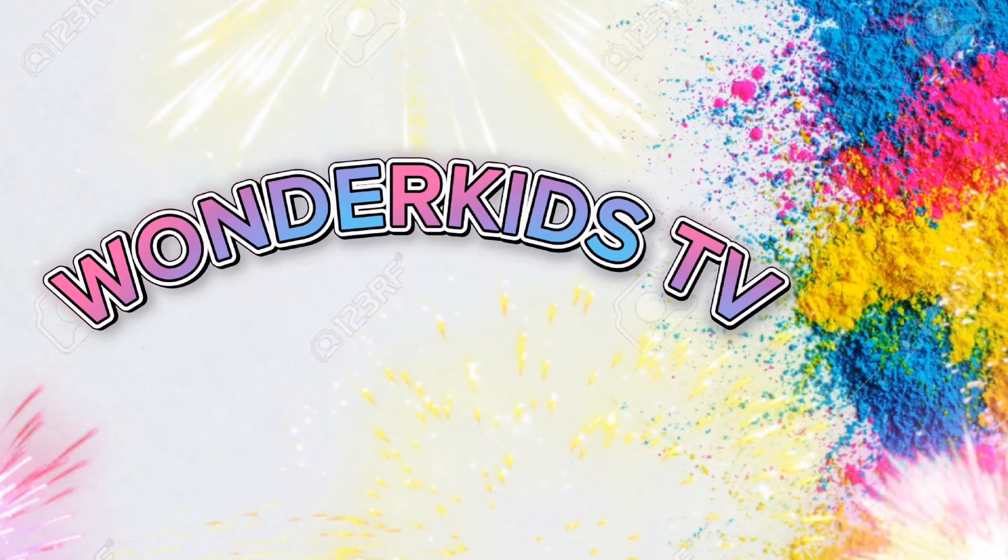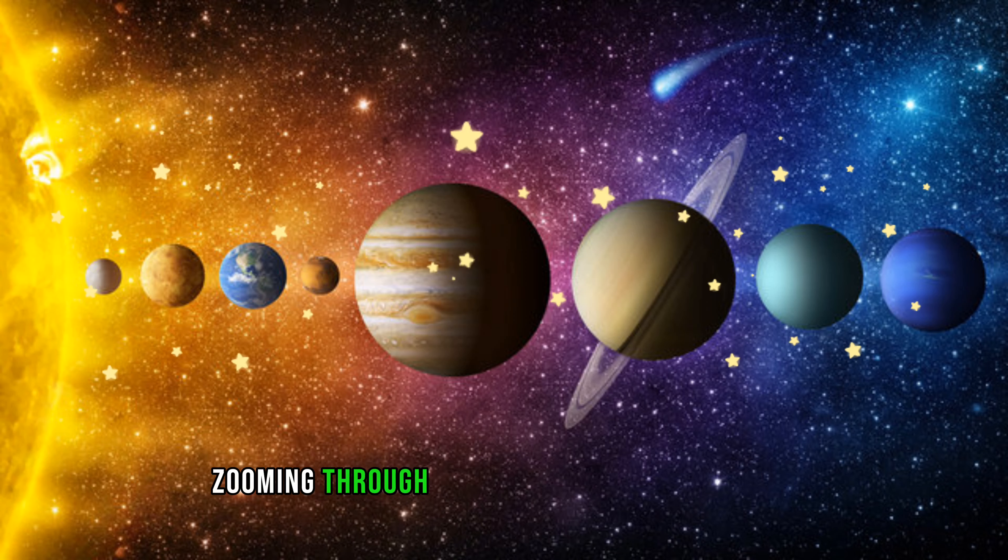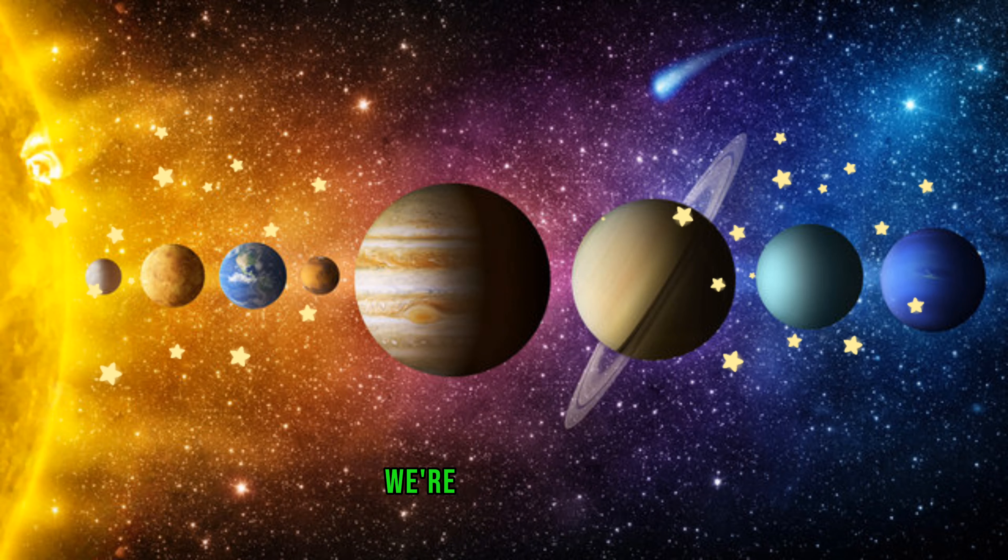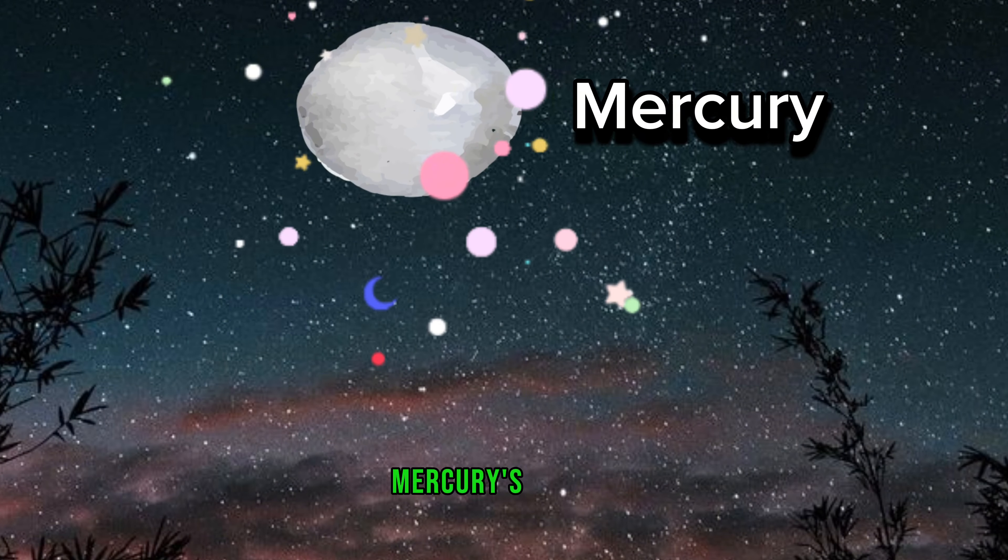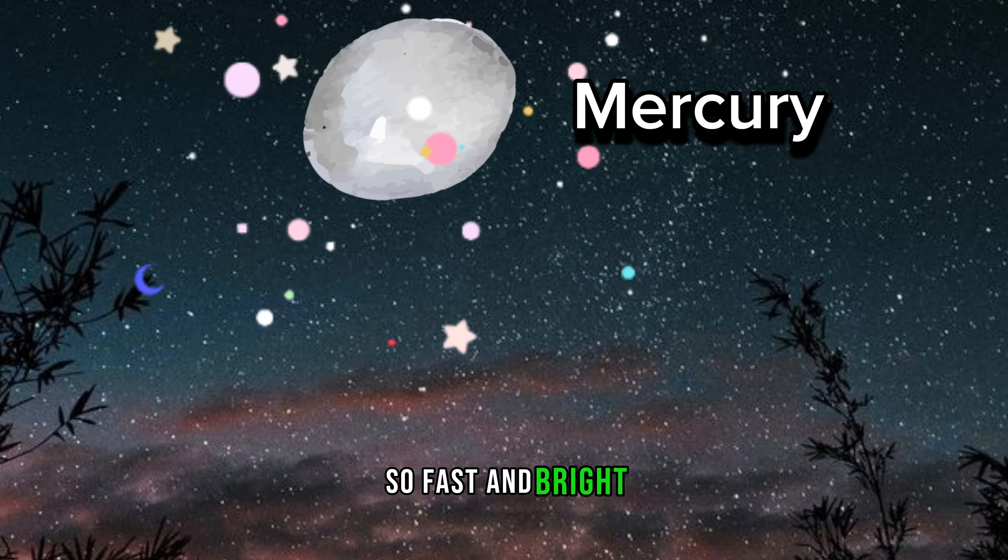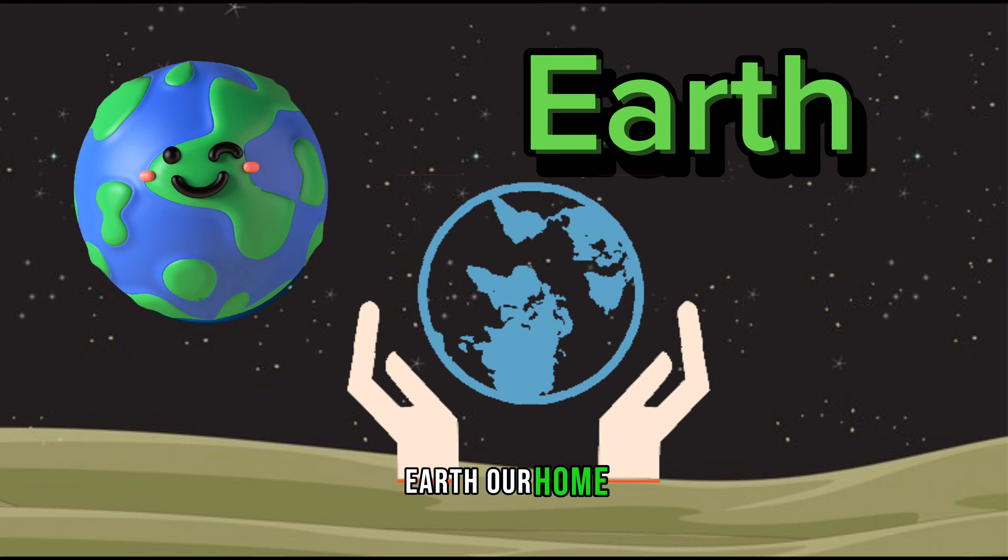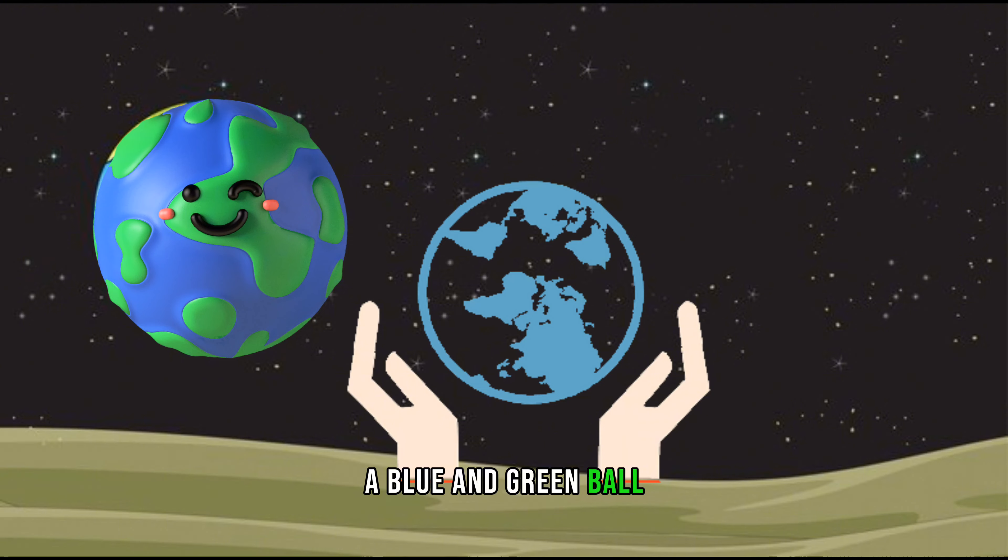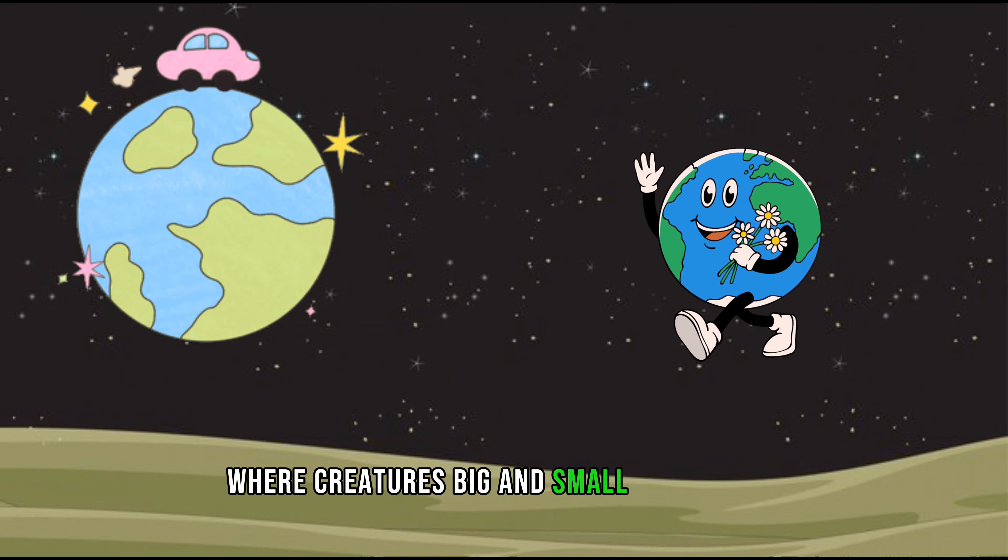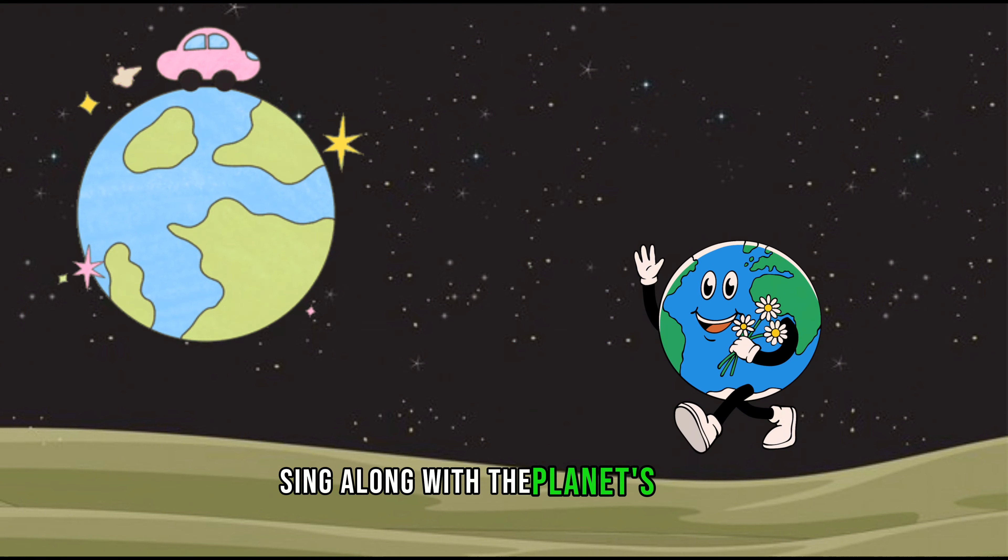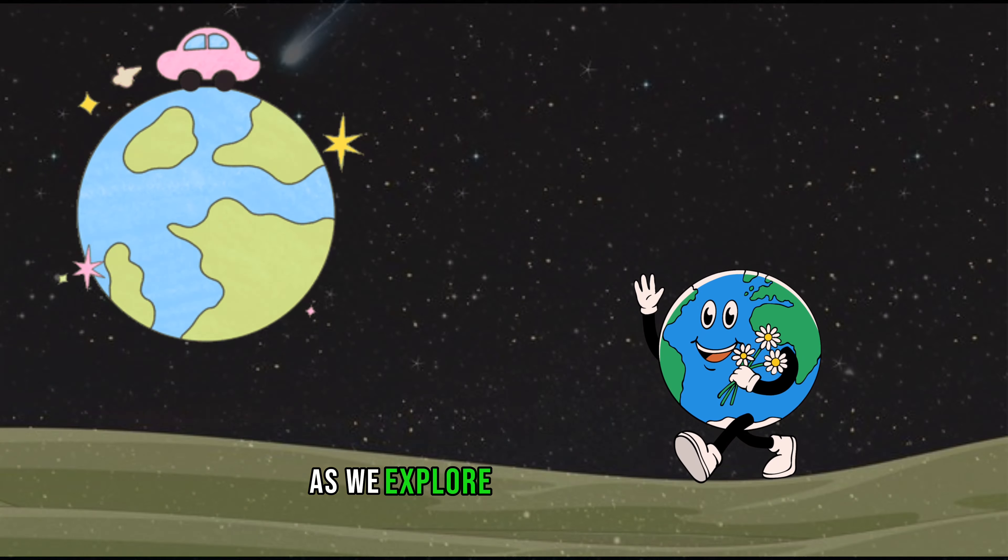Wonder Kids TV. Zooming through the Milky Way in our rocket, we're here to play. Mercury's speedy, so fast and bright, spinning around like a disco light. Earth, our home, a blue and green ball where creatures big and small have a ball. Sing along with the planet's cheer as we explore the atmosphere.